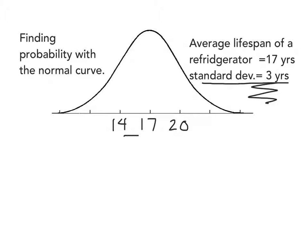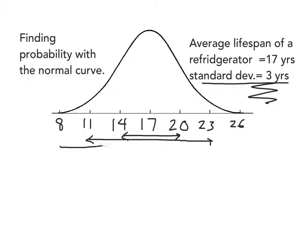About 68% of refrigerators will last between 14 and 20 years. If we go another standard deviation in both directions, we would get between 11 and 23 years out of the great majority of refrigerators — about 95% of all refrigerators last that long. If we go another standard deviation in both directions, 99.7% of refrigerators will last in that span of time.